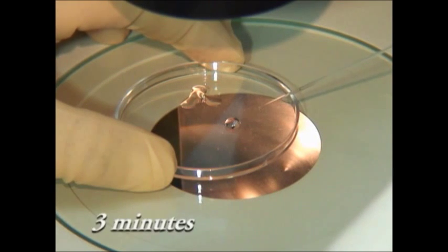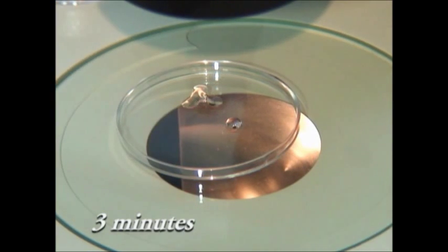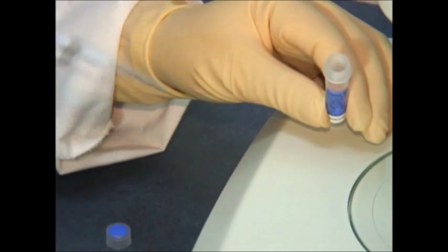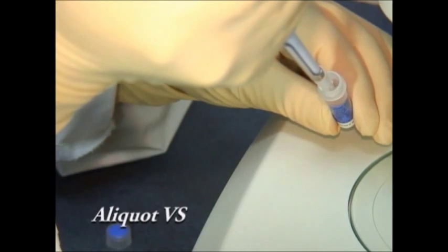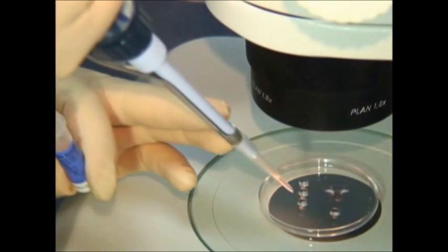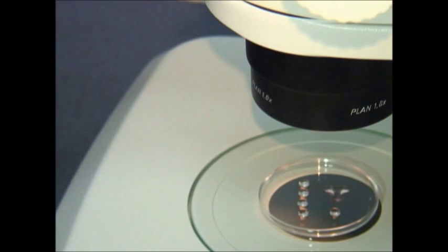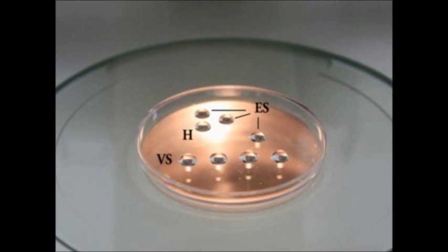After three minutes, the drop is merged with the second drop of equilibration solution and kept for further two minutes. After two minutes, the eggs are picked up using the pipette and transferred to the third drop of the equilibration solution and kept in that drop for three minutes.